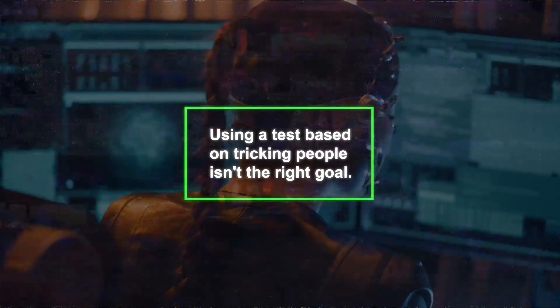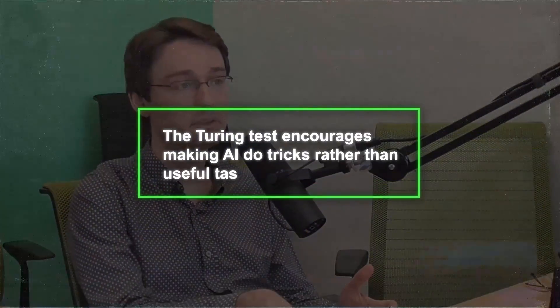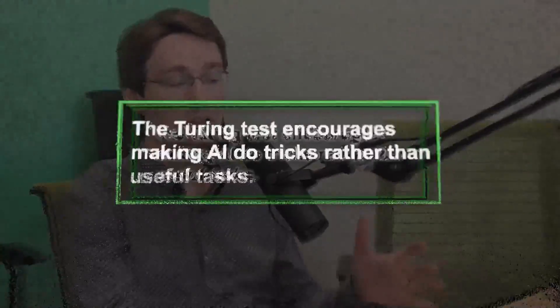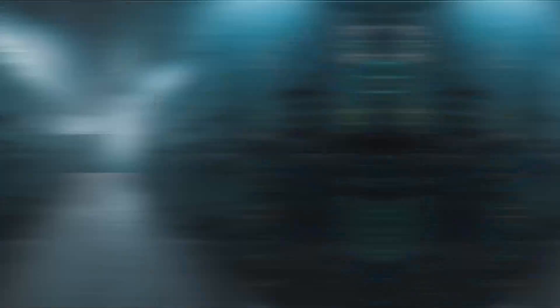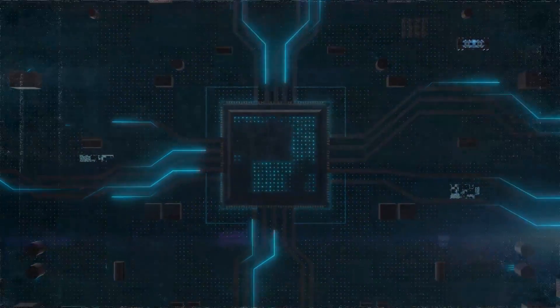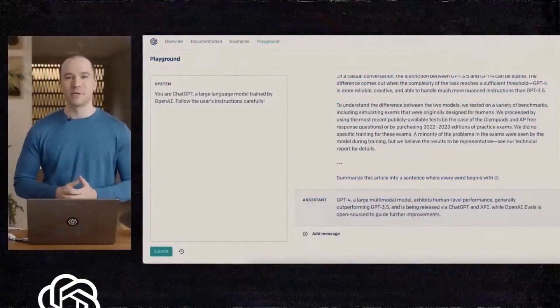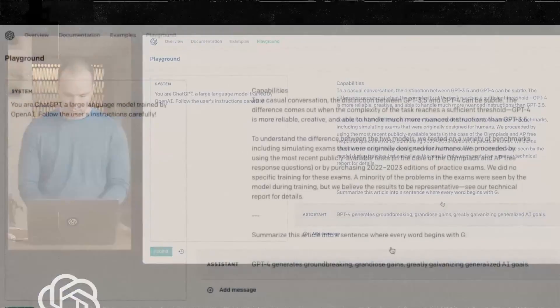Chalet mentions that the Turing test encourages making AI do tricks rather than useful tasks. Instead of the Turing test, many experts prefer specific benchmarks that look at certain abilities like language skills or math.